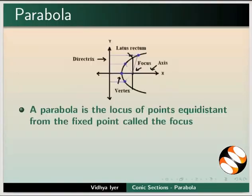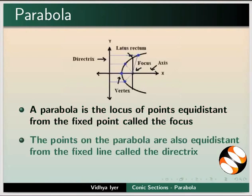A parabola is the locus of points equidistant from the fixed point called the focus. The points on the parabola are also equidistant from the fixed line called the directrix. Observe the different features of the parabola in the image.